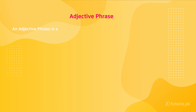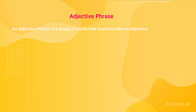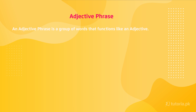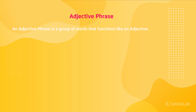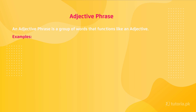An adjective phrase is a group of words that functions like an adjective. An adjective qualifies a noun — it gives a description of the noun and identifies or specifies it. For example: 'The black umbrella is mine' — here 'black' is simply an adjective.